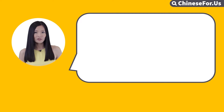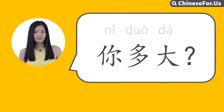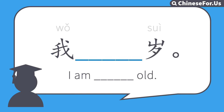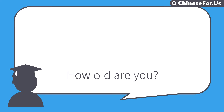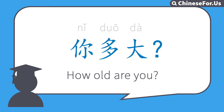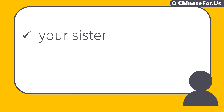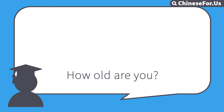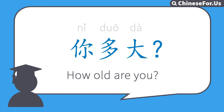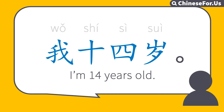So if I ask you your age, can you answer me? 你多大? You can say 我, your age, and then 岁. And here's your roommate again. Can you ask him his age? 你多大? 我二十一岁. And here's your sister. Can you ask her age? 你多大? 我十四岁. Very good.